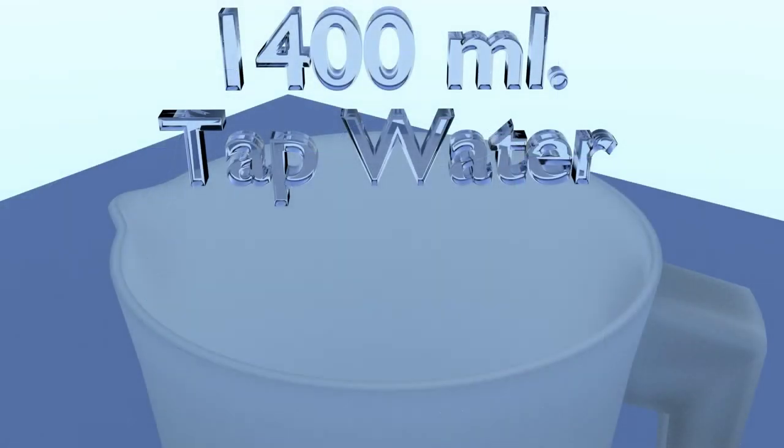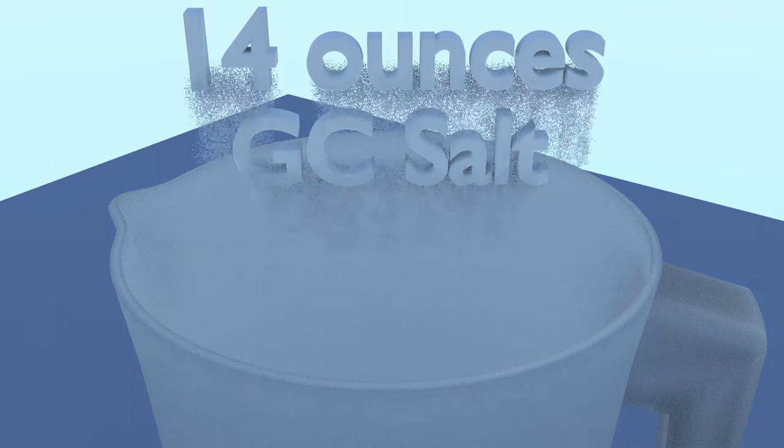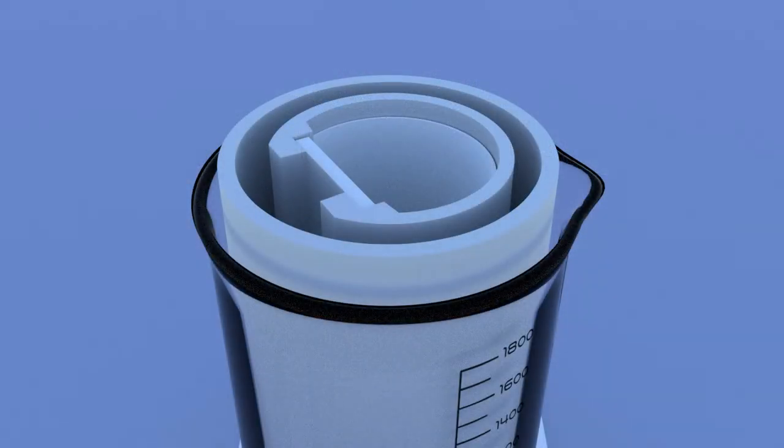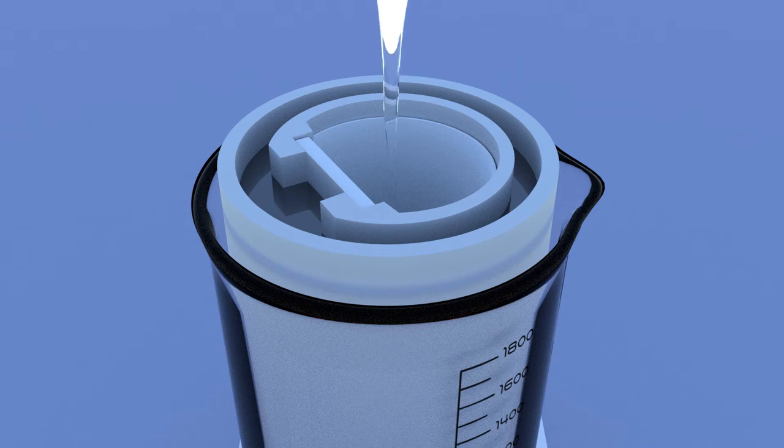Mix 1400 milliliters of tap water with 14 ounces of juicy salt. Add salt water to the cathode chamber first. Then, add salt water to the anode chamber.